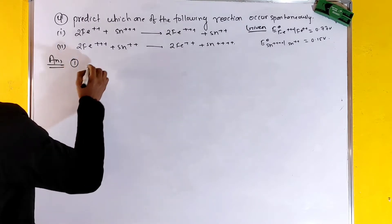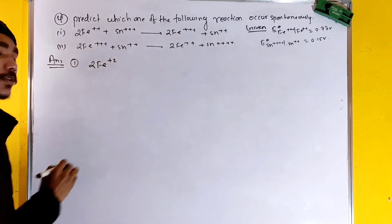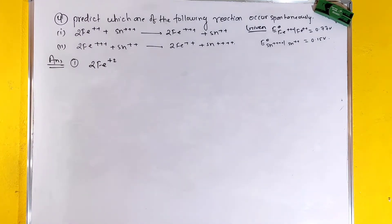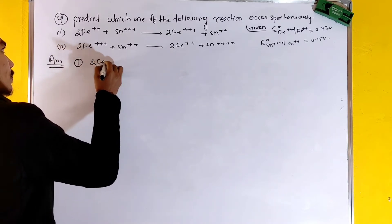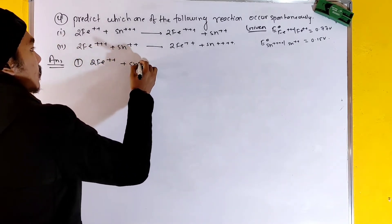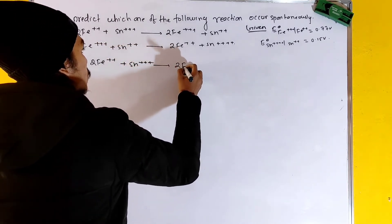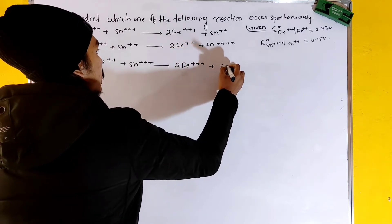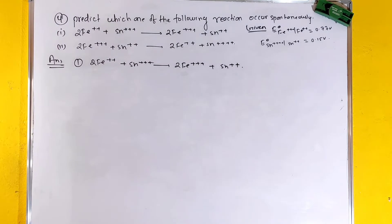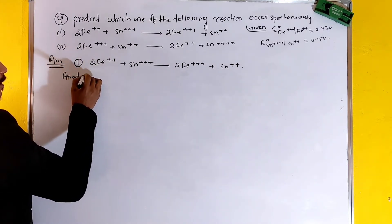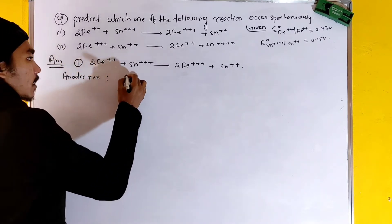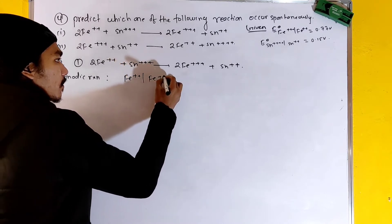Number 1 is 2Fe³⁺ plus Sn²⁺. Now we can find out the anodic reaction or cathodic reaction. First of all, oxidation is the anodic reaction. What is Fe²⁺? Fe²⁺ going to Fe³⁺ — this is the anodic reaction.